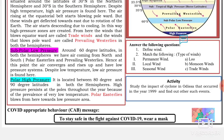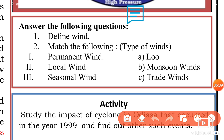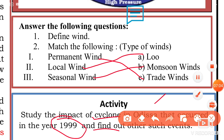Activity box number two: match the following types of wind. You will match permanent winds with trade winds, and local winds with land and sea breezes. I hope you have learned about winds. This is your worksheet. I hope you understand it. Thanks for watching. Bye-bye guys.